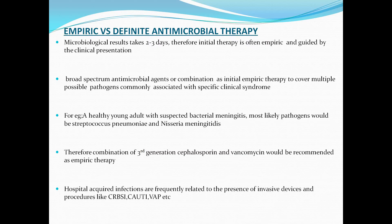Empiric versus definitive antimicrobial therapy: it takes approximately 2-3 days for microbiological results. Therefore, initial therapy is often empiric and guided by the clinical presentation. Broad-spectrum antimicrobial agents or combinations as initial empiric therapy can be used to cover multiple possible pathogens commonly associated with a specific clinical syndrome. For example, in a healthy young adult with suspected bacterial meningitis, the most likely pathogens would be Streptococcus pneumoniae and Neisseria meningitidis; therefore, a combination of 3rd generation cephalosporin and vancomycin would be recommended as empirical therapy. Hospital-acquired infections are frequently related to invasive devices and procedures like catheter-related bloodstream infection, catheter-associated urinary tract infection, and ventilator-associated pneumonia.